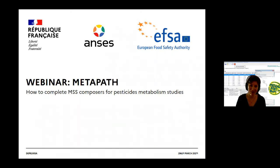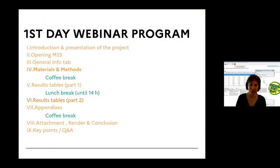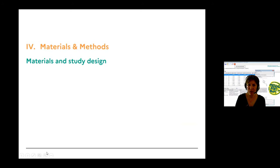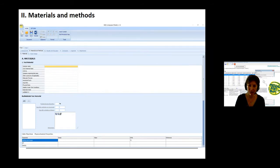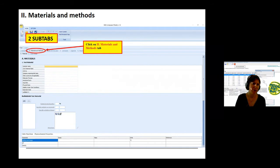Thank you Vincent, for the first part on opening the MSS Composer and filling the General Info tab. Now I will explain how to complete the tab corresponding to materials and methods. There are two main parts: Material and Study Design. To navigate, click on Tab 2, Material and Method. Sub-tab A, Materials, summarizes the test material, the test crop and the soil type. Under Test Material, fields can be populated by directly typing information such as common name, CAS number, company experimental name, molecular formula, batch number, etc. The only recommendation for this table is to respect the maximum number of characters.